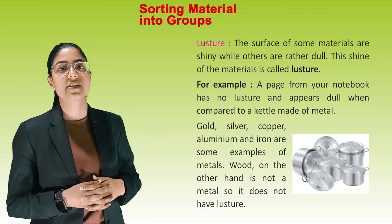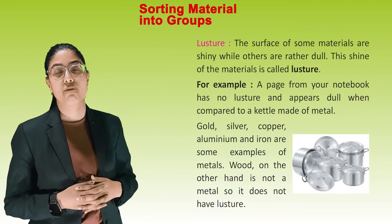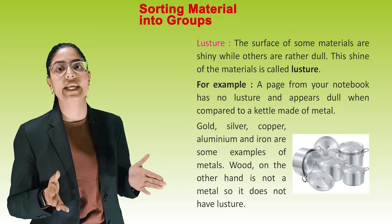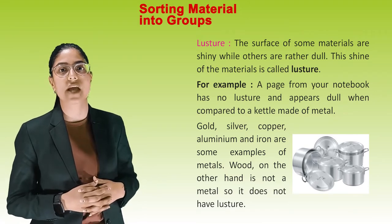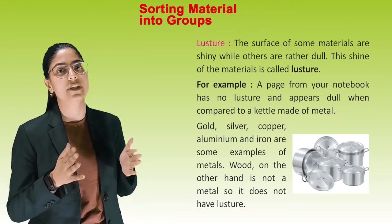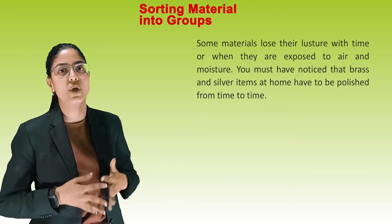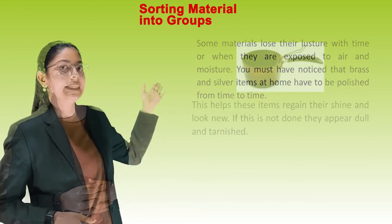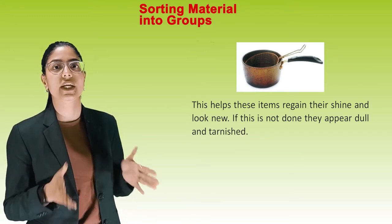The surface of some materials is shiny while others are rather dull. This shine of the material is called luster. For example, a page from your notebook has no luster and appears dull when compared to a kettle made of metal. Gold, silver, copper, aluminium, and iron are examples of metals that have luster. Wood, on the other hand, is not a metal and does not have luster. Some materials lose their luster with time or when exposed to air and moisture. Brass and silver items at home have to be polished from time to time to regain their shine; if not done, they appear dull and tarnished.